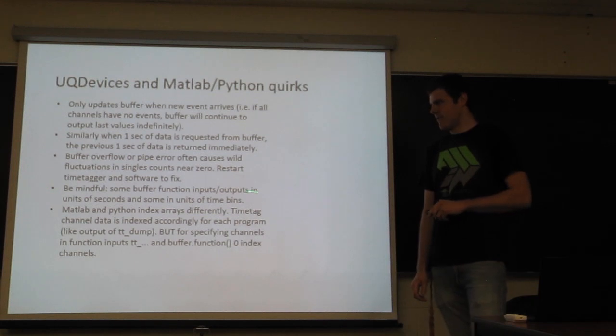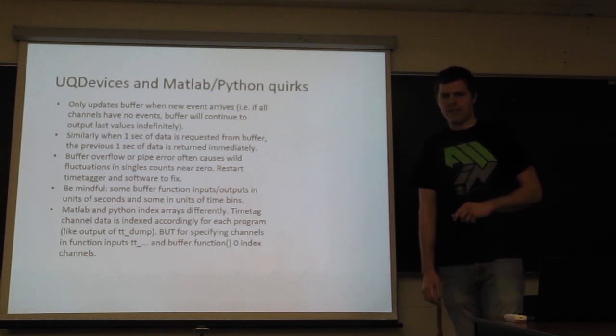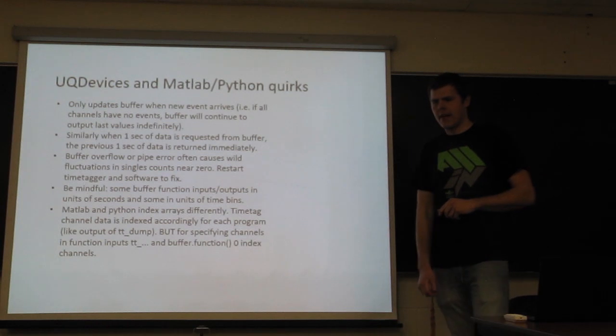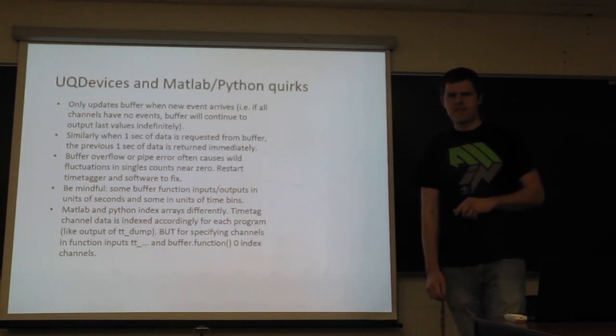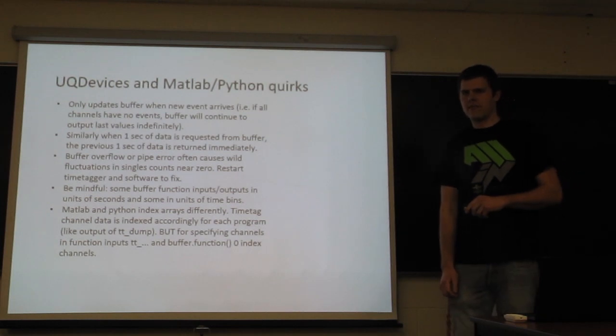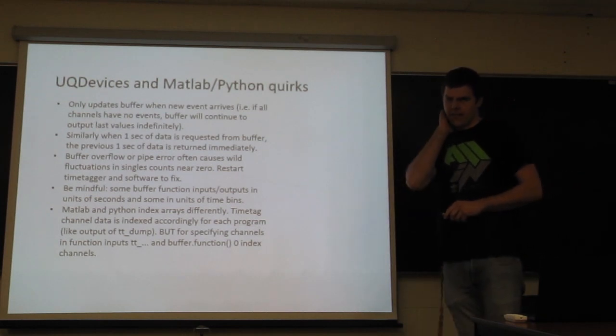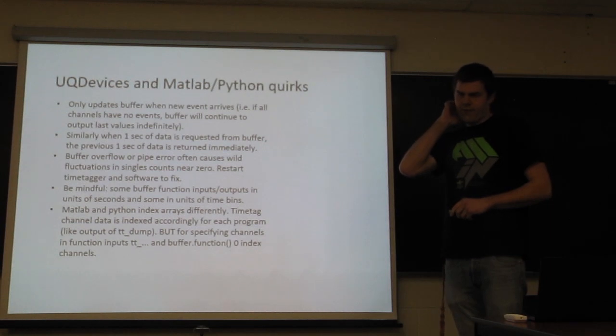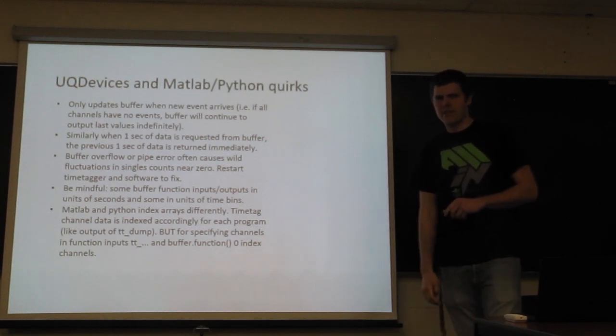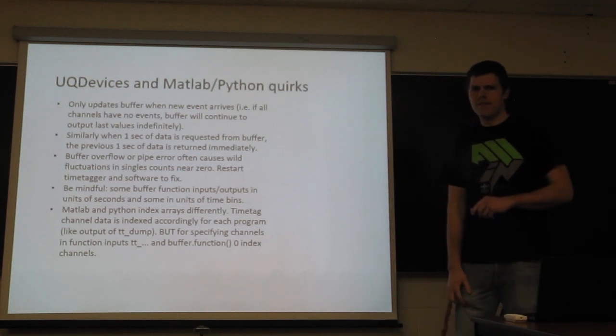Additionally, this is one of the most common errors I see when people start to use the time tagger is they're not very careful about the function inputs. Some of these inputs are in the units of seconds. Some of these are in the units of time bins. And if you mix that up, you will get very unreliable and weird results. And all this is specified in the function declarations and the documentation, so you just have to be careful.